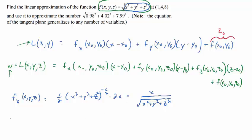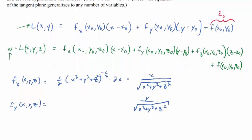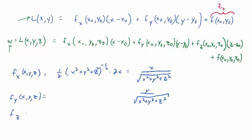And then by symmetry, you can get the rest of them. F sub y at x, y, z is y divided by that same square root. And then similarly, f sub z would be z divided by that same square root.